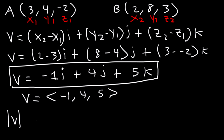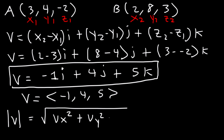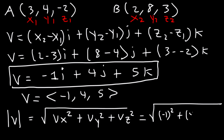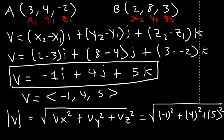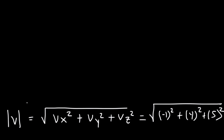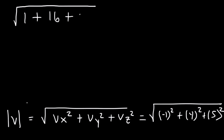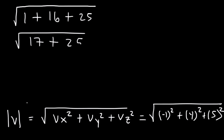To find the magnitude, take the square root of the x component squared plus the y component squared plus the z component squared. So it's the square root of (-1)² plus 4² plus 5². That gives the square root of 1 plus 16 plus 25, which equals the square root of 42. We can't simplify the square root of 42, so that's the magnitude.